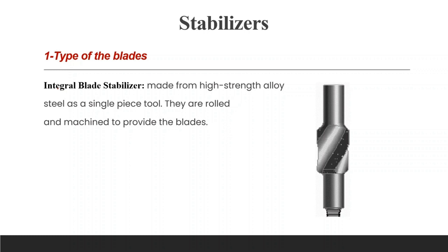Integral blade stabilizers are made from high-strength alloy steel as a single piece tool. They are rolled and machined to provide the blades — meaning the body of the stabilizer and the blades are made from one part. The blade is not welded, not replaceable, and not an individual sleeve. The IBS is well suited for use in most formations from soft to sticky, hard, and abrasive formations, as its blades are integrated with the body, eliminating the risk of leaving contaminants or pieces in the hole.